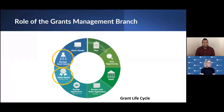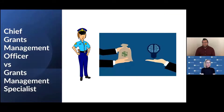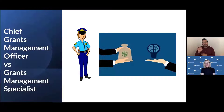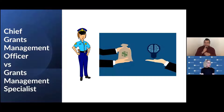The role of the grants management branch is to make the award and manage the award. Let's first start with the roles of the chief grants management officer and the grants management specialist. The GMO is like the police officer for the grants department — it's their responsibility for completion of business management requirements and to oversee that all awards comply with federal regulations. The GMS acts as an agent for the GMO.